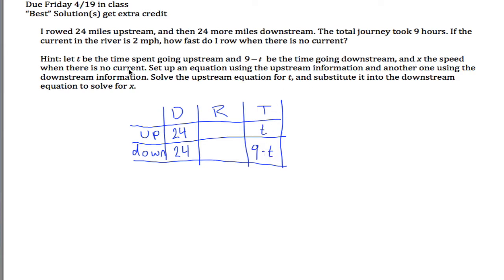And then let x be the speed when there's no current. So what I want here is the speed when I'm going upstream. I know x is the speed when there's no current, so if I'm going upstream into 2 miles per hour current, I'm going to be going 2 miles per hour less than x, so my speed will be x minus 2. And similarly, if I'm going downstream, it would be x plus 2.